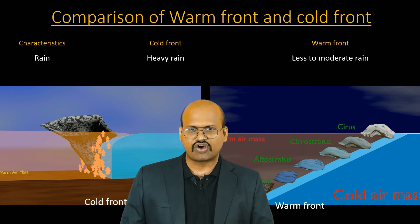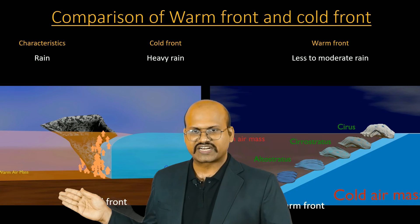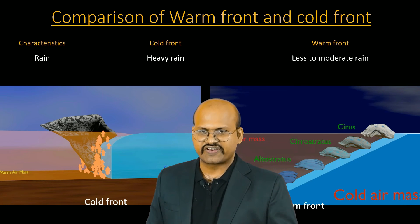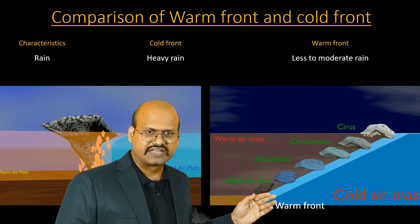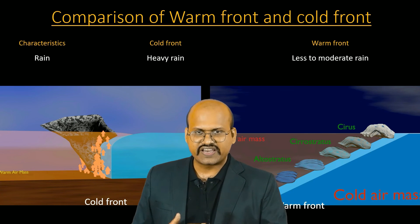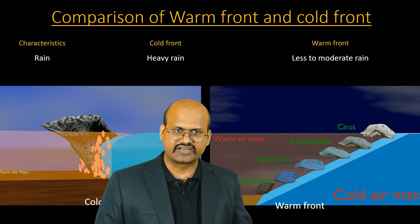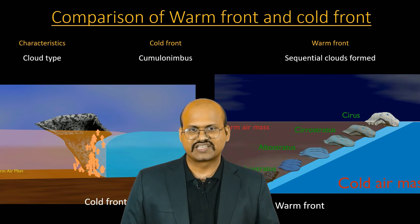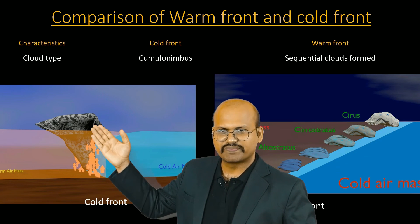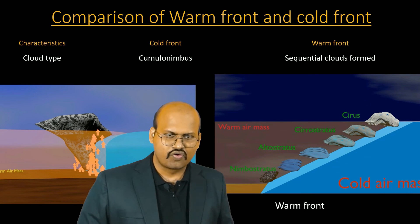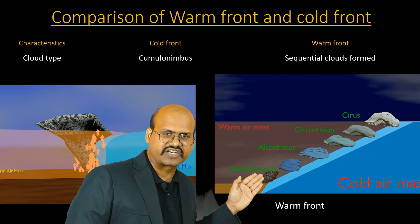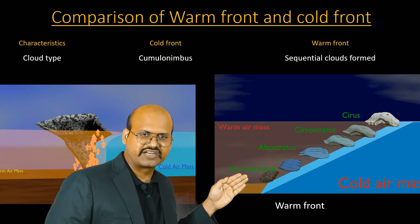Regarding rain: at cold fronts, because of the rapid rise of warm air, large cumulonimbus clouds are formed which give a lot of rain. There is very heavy rainfall at these fronts. At warm fronts, clouds are evenly spread over a very large area and do not give as much rain. Therefore rain is very heavy at cold fronts while rain is less to moderate at warm fronts. Regarding type of cloud: at the cold front, rapidly rising air causes cumulonimbus cloud formation giving very heavy rain, while at the warm front sequential clouds are formed, starting as nimbostratus and transforming into different types.